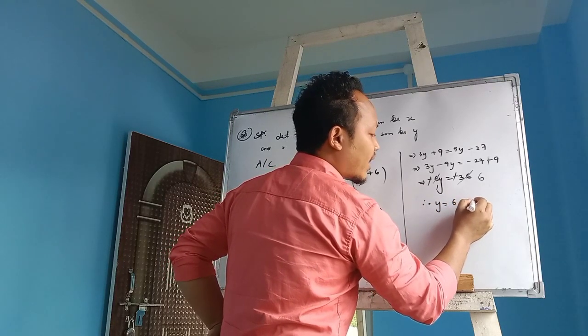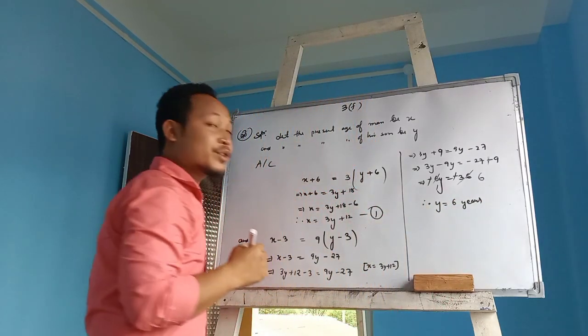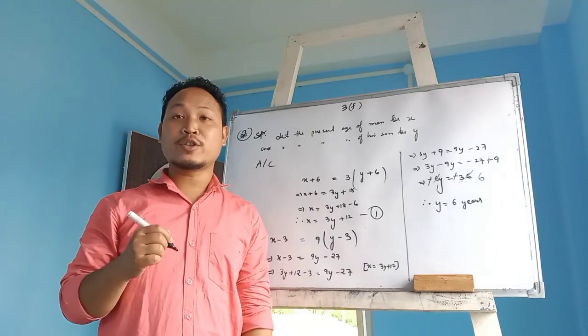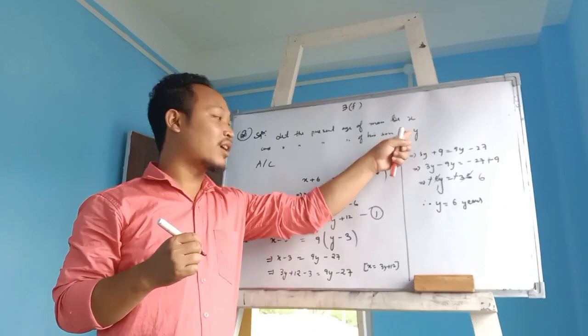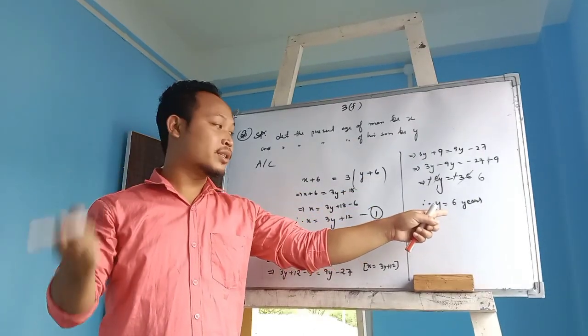Who is y? Who is y? Sun's present age is y. So the son is 6 years.